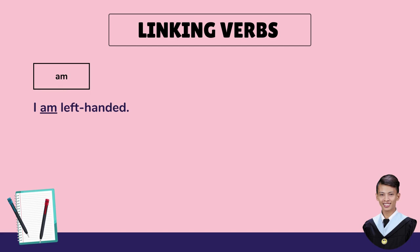Example: the linking verb am. I am left-handed. The underlined word, which is am, is the linking verb. It connects the subject I and the adjective left-handed. We cannot directly say 'I left-handed' — that's wrong. So we need to put the appropriate linking verb, which is am, to connect our subject I and the adjective left-handed to make the sentence correct. It now becomes: I am left-handed. There's no action nor movement in this sentence. It's just simply saying that I am left-handed.